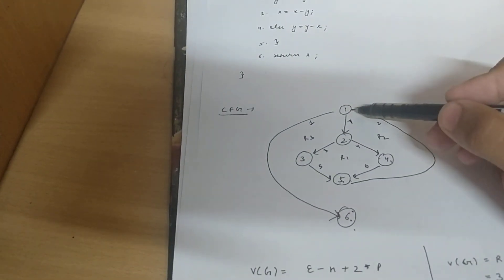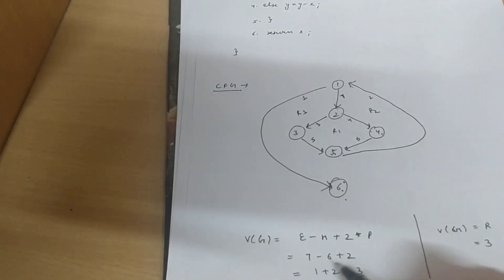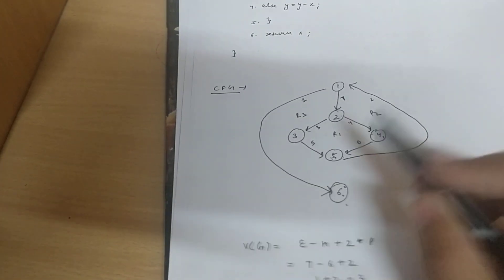And number of nodes 1, 2, 3, 4, 5 and 6. 7 minus 6 plus 2 which is 3. This is the Cyclomatic complexity of this example.